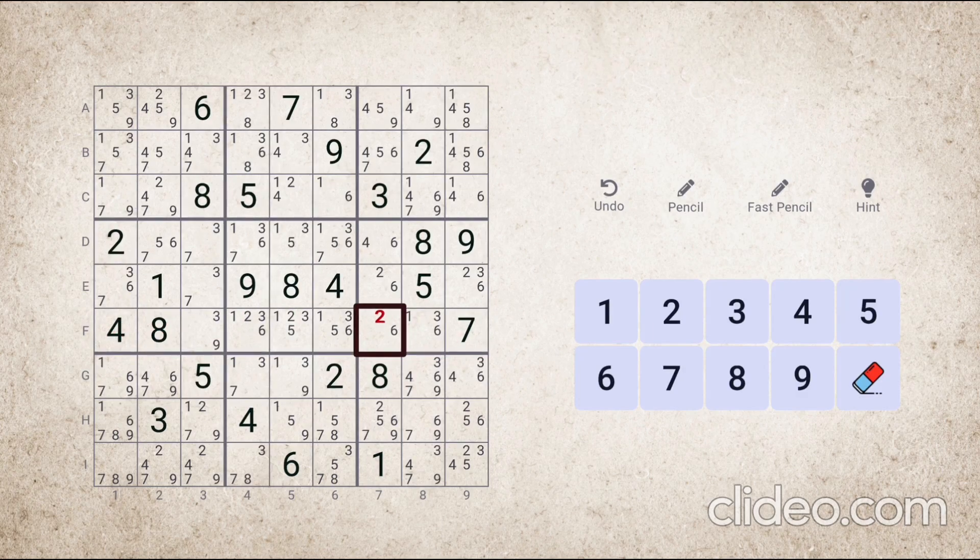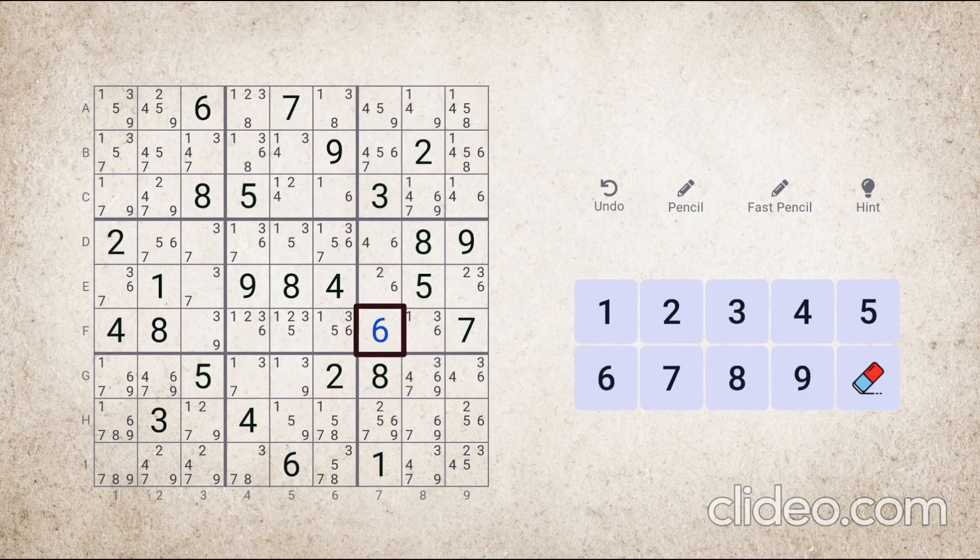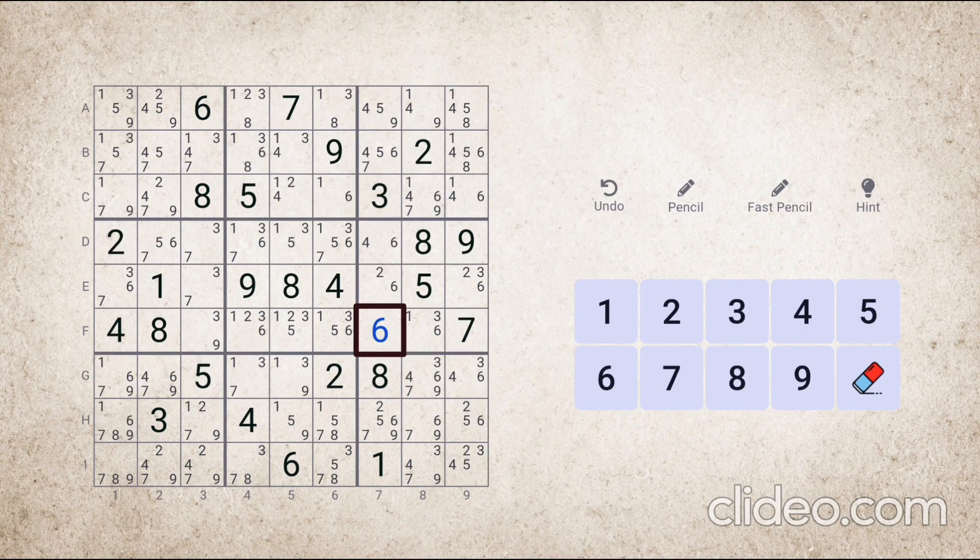Number two cannot come in this cell and after removing two, we can fill six here. How will it happen? Why will it happen? To know this, keep watching.